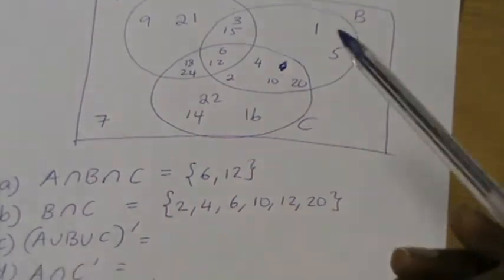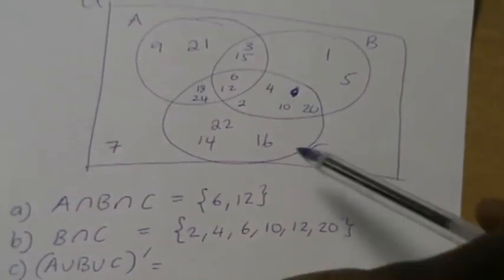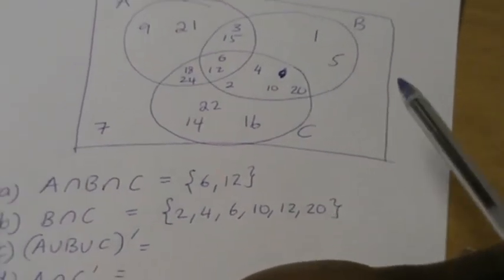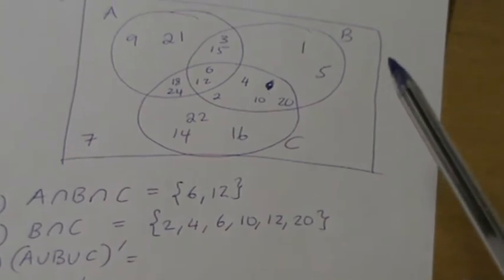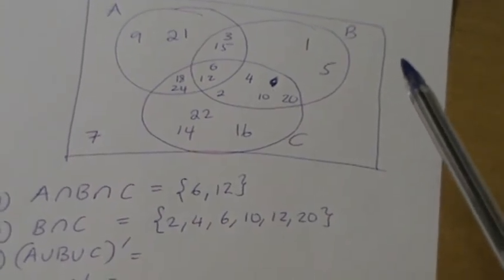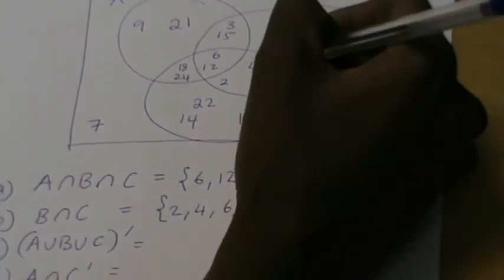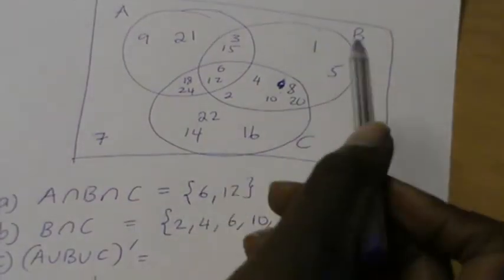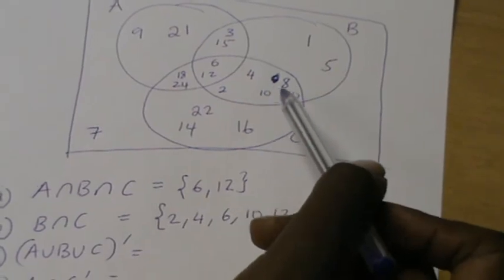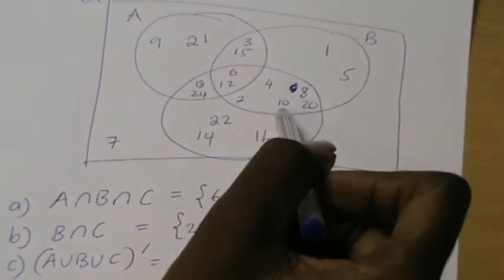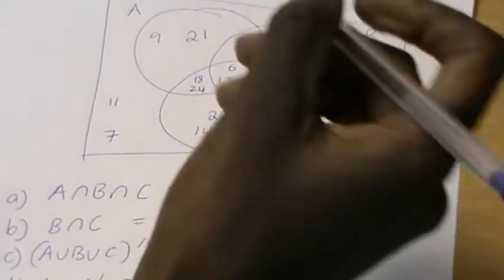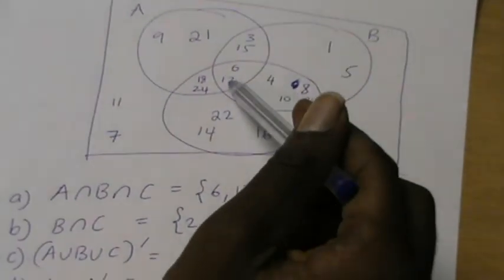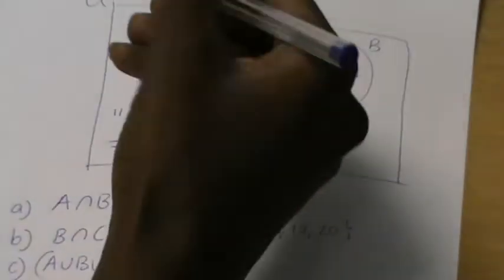So 7 should be outside. Where is 8? 8 should be here. 8, where are you? 8 is not included, but 8, I think the time I wrote 6, that is what I should have. I have 8, then I have 9, there you are, 10, 11 not there, and I have 12, there it is, 13 not here.